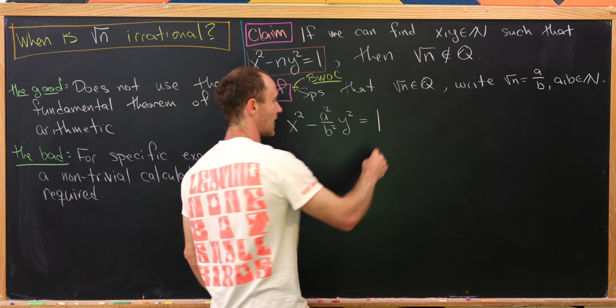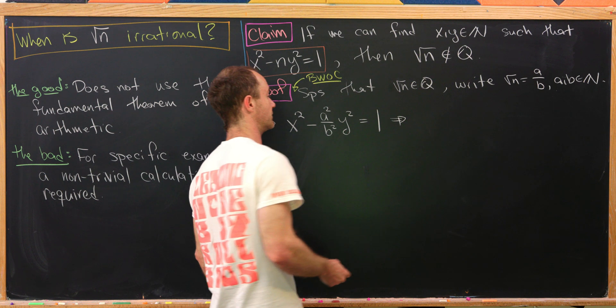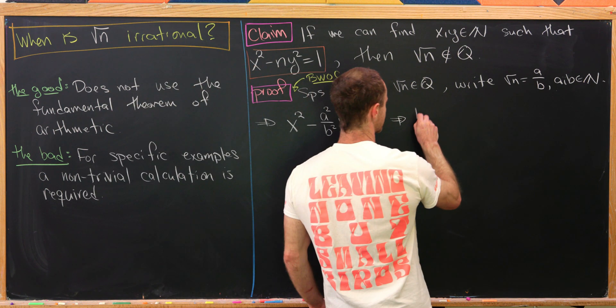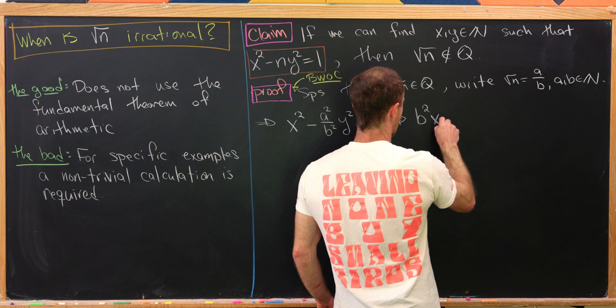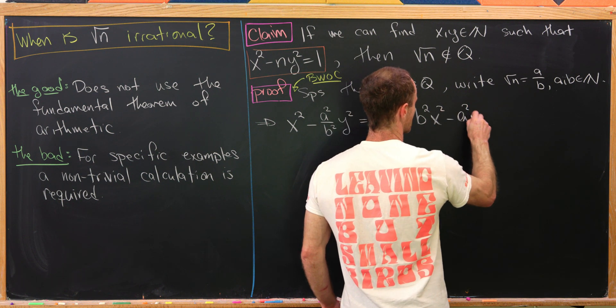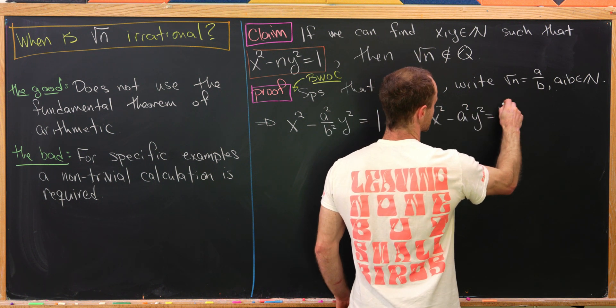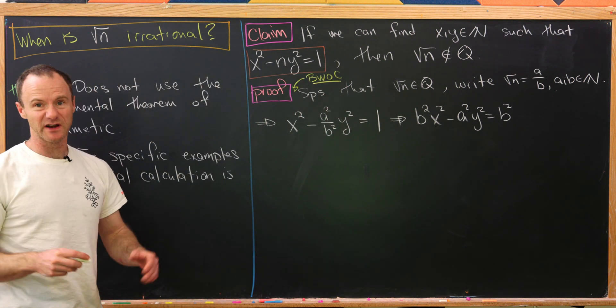Now I'm going to clear the denominator so this looks a little bit nicer. We have b squared x squared minus a squared y squared is equal to b squared.